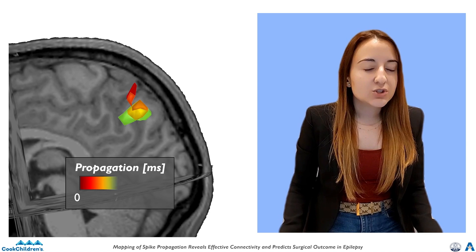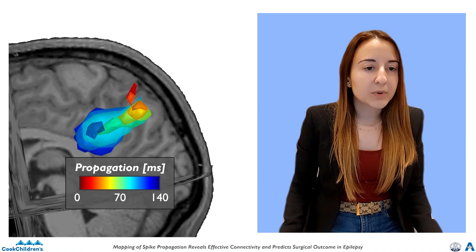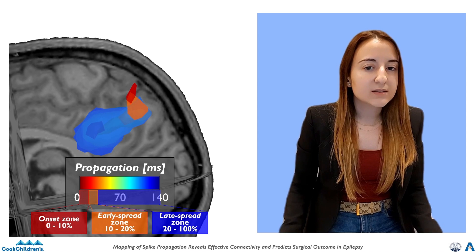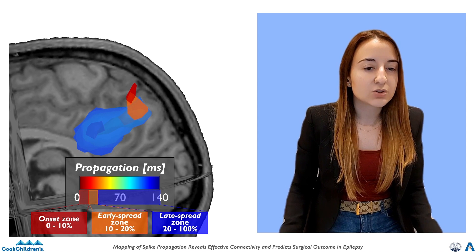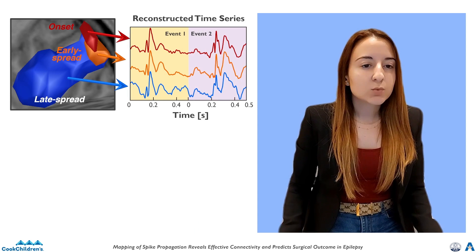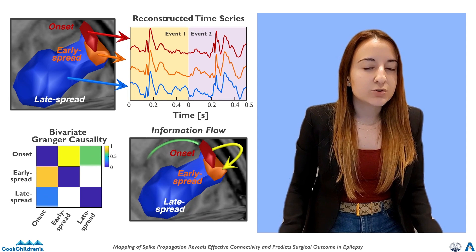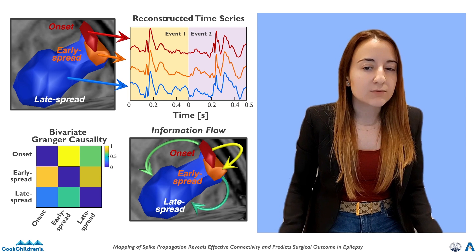This animation shows a reconstructed spike propagation for one patient in our cohort. We identified three zones of interest: the onset, corresponding to the initial phase of the propagation; the early spread; and the late spread zones. We then extracted a time series from each zone and used a data-driven model called Granger causality to calculate the effective connectivity, meaning the information flow among these different zones.